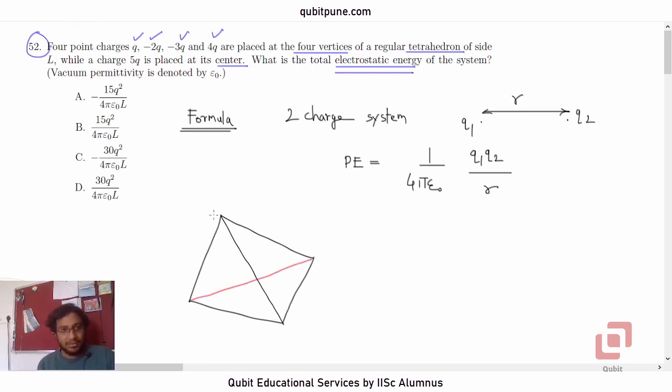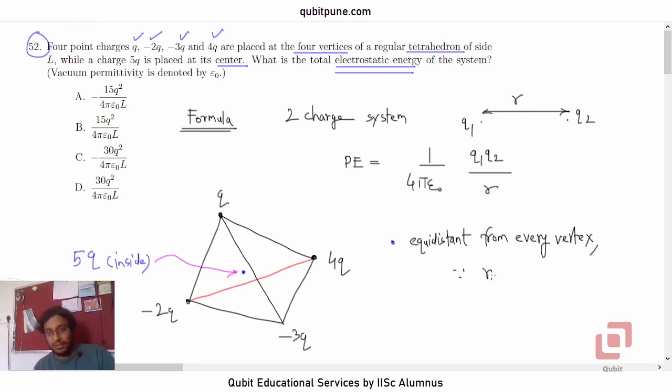Let us name these points now. q is here, negative 2q is here, negative 3q is here, 4q is here. And somewhere inside, let me show that in blue color, somewhere inside is our charge 5q at the center of the regular tetrahedron. So that's the second point I want to tell you. This point, let us call it p, the blue dot. The blue dot is going to be equidistant from every vertex because the tetrahedron is regular.